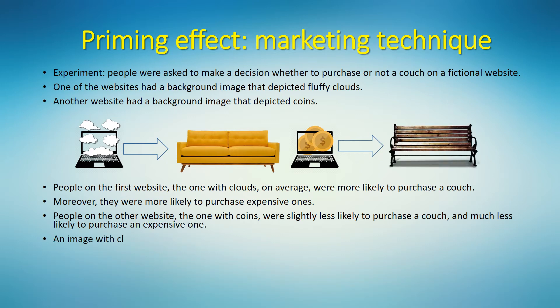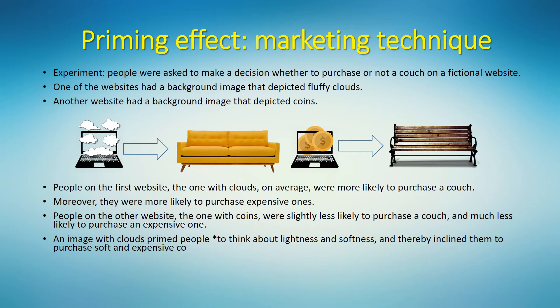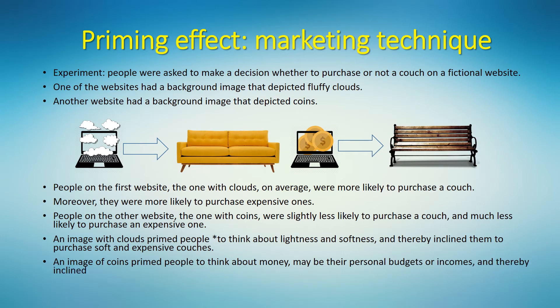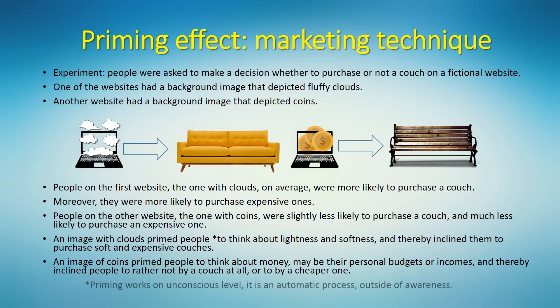Sounds too simple, but it's true. An image with clouds primed people to think about lightness and softness, and thereby inclined them to purchase soft and expensive couches. An image of coins primed people to think about money — maybe their personal budgets or incomes — and thereby inclined people to rather not buy a couch at all, or to buy a cheaper one. The expression 'primed to think' is not quite correct, of course, because priming works on an unconscious level — it is an automatic process, outside of awareness.